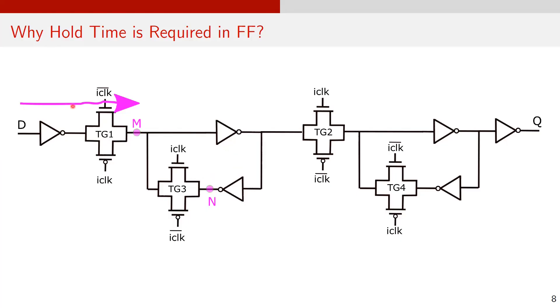The path highlighted here is key to find the hold requirements of a flop and establish a stable value at node M.